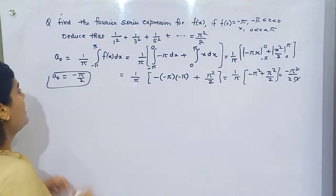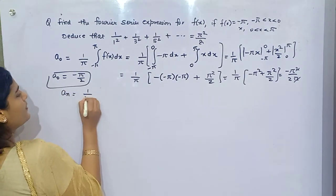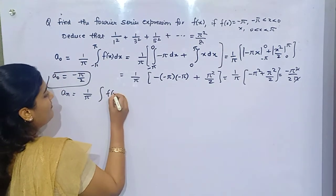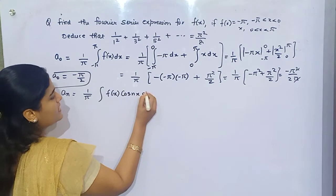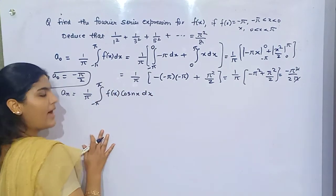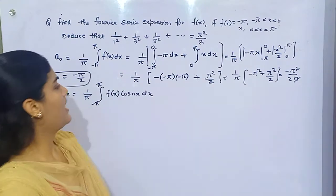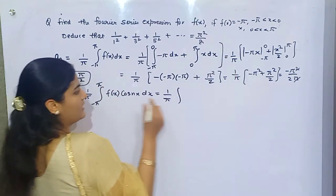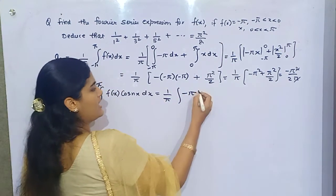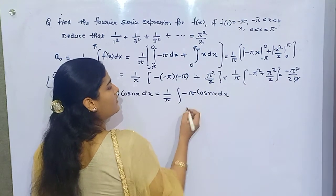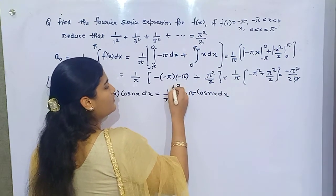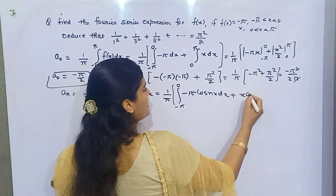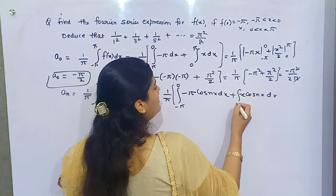That means your A₀ is minus pi/2. Now for Aₙ, the expression is 1/π times the integral of f(x) cos(nx) dx from minus pi to pi. But again splitting the function: it is minus pi cos(nx) dx for the interval minus pi to 0, and x cos(nx) dx for the interval 0 to pi.